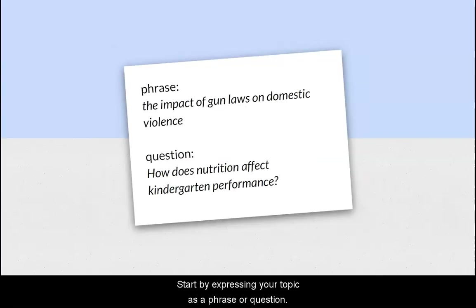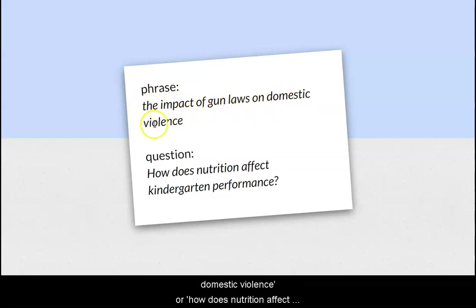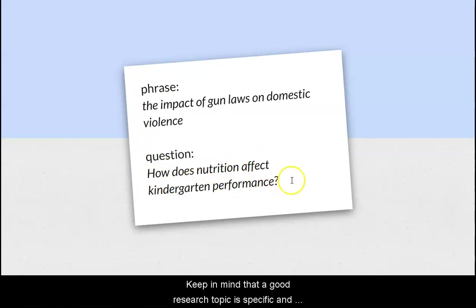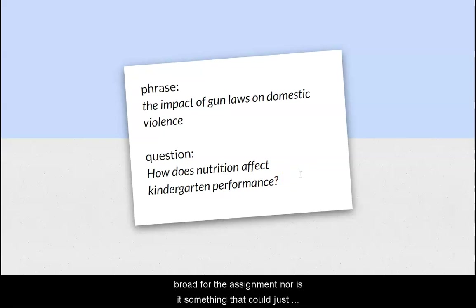Start by expressing your topic as a phrase or question. For example, the impact of gun laws on domestic violence, or how does nutrition affect kindergarten school performance. Keep in mind that a good research topic is specific and complex — not too broad for the assignment, nor something that could just be answered with a Google search.